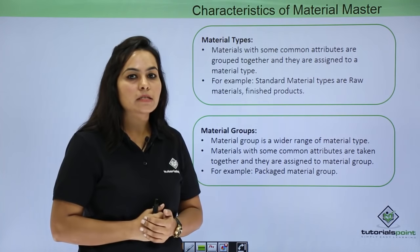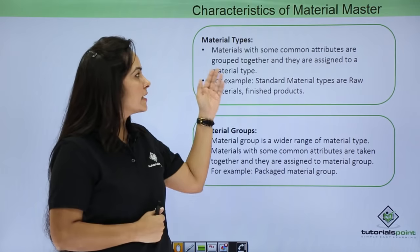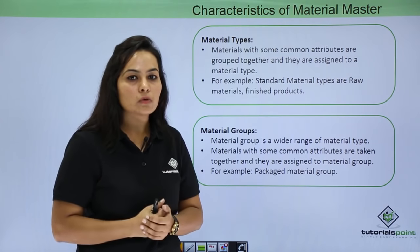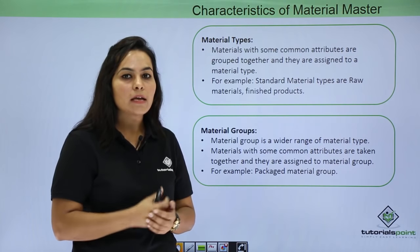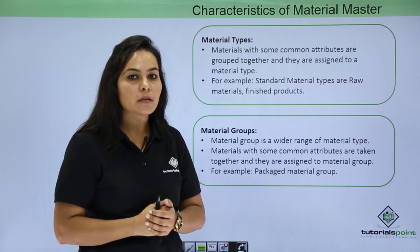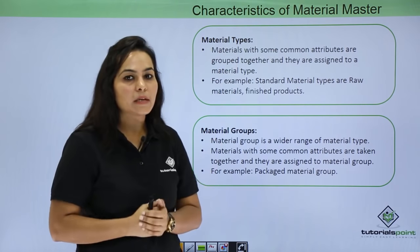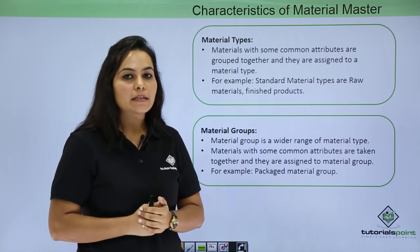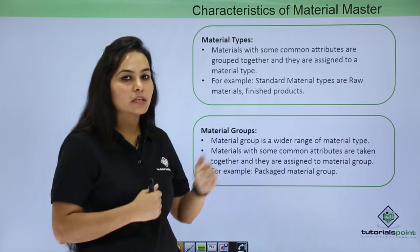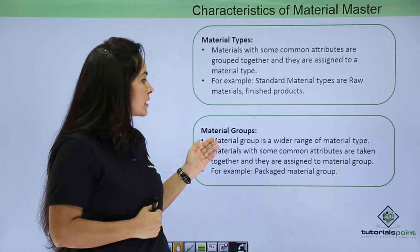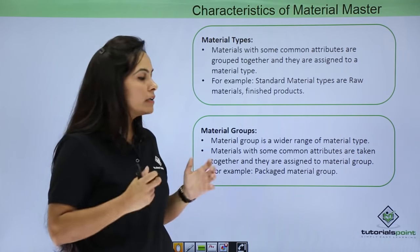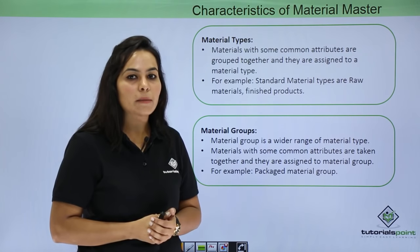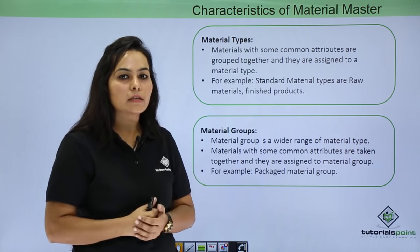Next is the characteristics of Material Master. The first characteristic is Material Type. Suppose you have wool and woolen cloth — wool can be termed as raw material and woolen cloth is a finished product. These attributes are termed as material type. The standard material types available are raw material and finished product. The next characteristic is Material Group — materials with some common attributes are grouped together. For example, a material that requires packaging can be defined under one group.